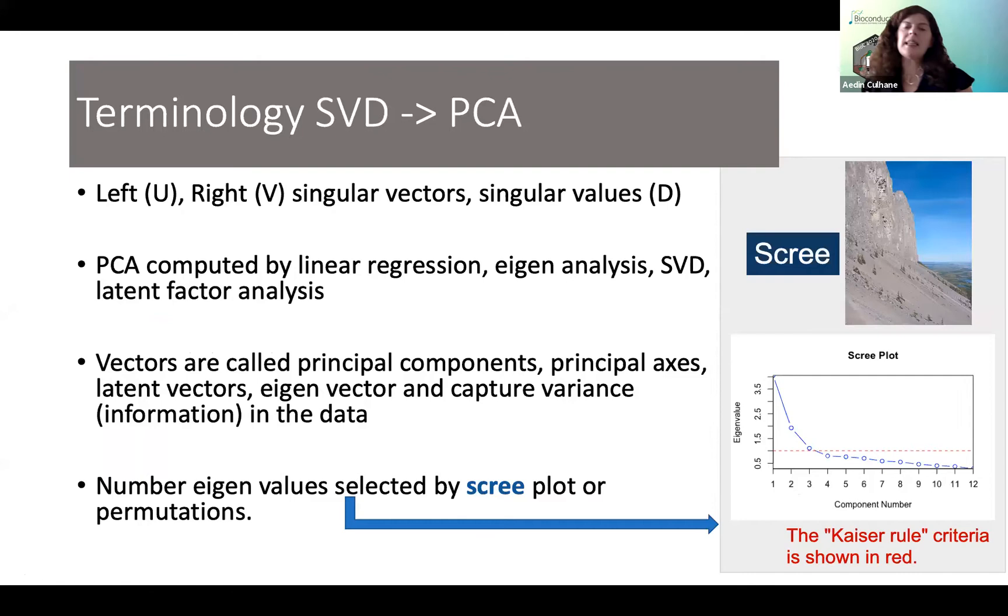So PCA and pretty much most matrix factorization methods can be computed by many different ways, linear regression, eigenanalysis, SVD, latent factor analysis. But the most common approach used in almost all modern matrix factorization is SVD. And this is what's used in all of the single cell and that data analysis. When you're talking about these three matrices, when computed using any of these approaches, the actual matrices and the columns of those matrices are called different names. And that can be really confusing to the beginner. The singular vectors can now be called the principal components, the principal axes, the latent vectors, the eigenvectors, the eigengenes. If people are doing face recognition, sometimes the eigenfaces. And just be aware that there's a lot of terminology there. But at the end of the day, you're looking at three matrices,